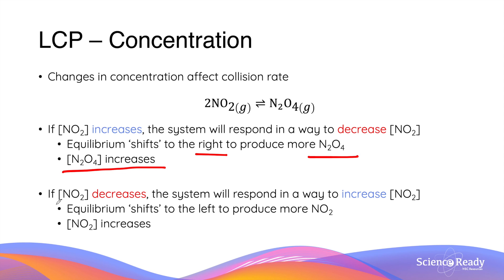On the other hand, if the concentration of nitrogen dioxide decreases, according to Le Châtelier's Principle, the system will respond in a way to increase the concentration of nitrogen dioxide. So the system will try to move the equilibrium in a way to reduce the change that has occurred. Specifically, the equilibrium will shift to the left-hand side in order to produce more nitrogen dioxide, so the concentration of nitrogen dioxide will increase due to this movement of equilibrium position.